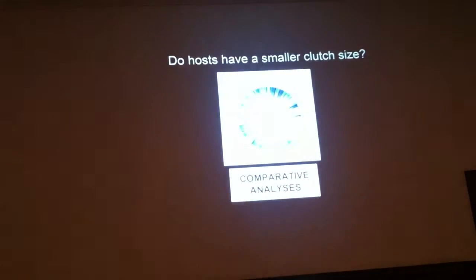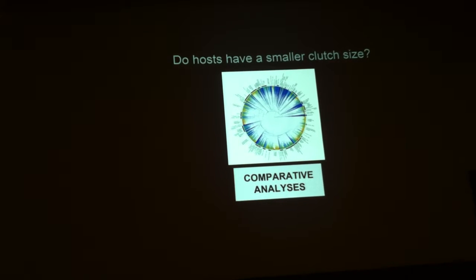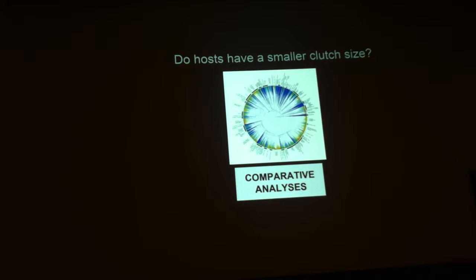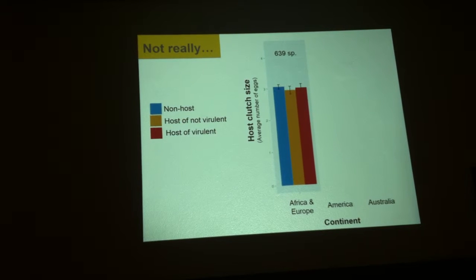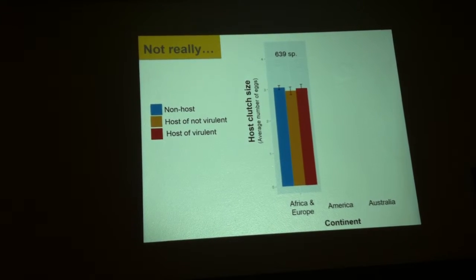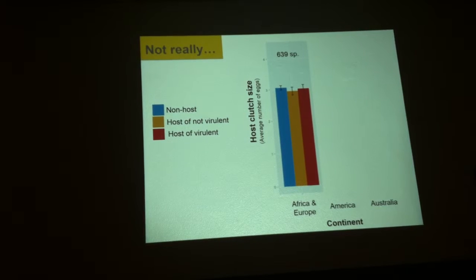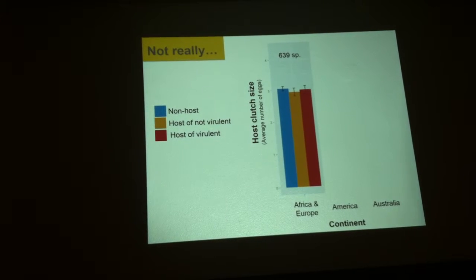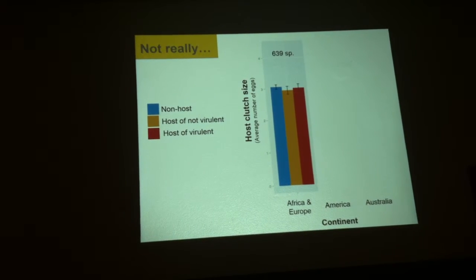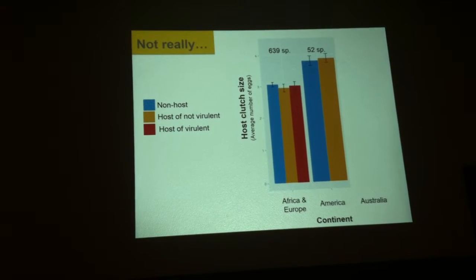We wanted to know in real life whether there is evidence for the tolerance hypothesis — whether hosts actually have a smaller clutch size than non-hosts. We collected information on clutch size and host status all around the world. In this graph we have three categories: non-hosts in blue, hosts of non-virulent parasites such as cowbirds in orange, and hosts of virulent parasites which are mainly cuckoos in red. What we see is that there is no difference in these three categories — they have basically the same clutch size in Africa, Europe, and America.